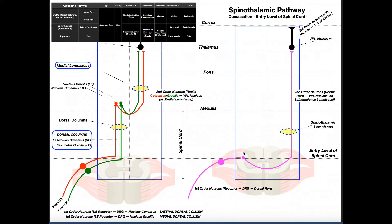This is not what we see in the spinal thalamic pathway compared to DCML. In DCML, the proximal axon is very long — it ascends up the spinal cord in the dorsal columns all the way to the medulla. Here, however, the proximal axon of the first-order neuron terminates right at the entry point of the spinal cord, because that is where we have the cell bodies of the second-order neurons, located in the lateral dorsal horns.